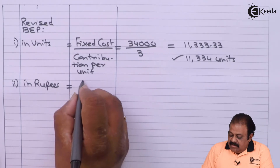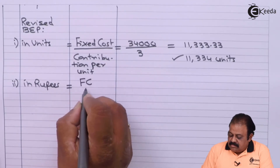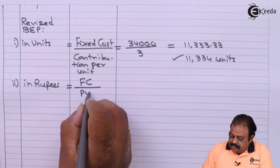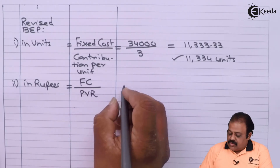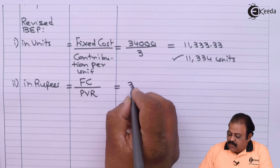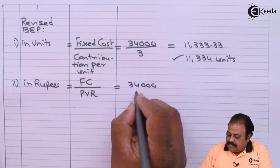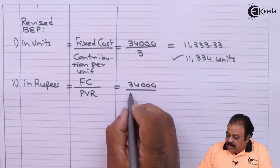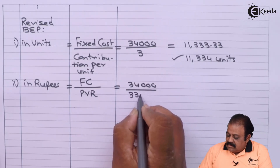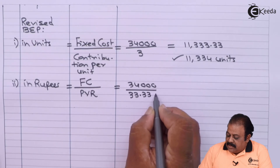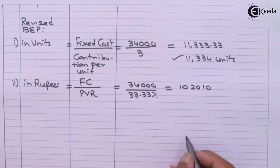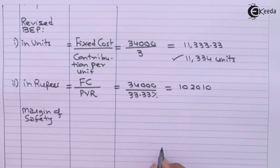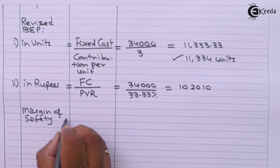For revised break-even point in rupees, the formula is fixed cost divided by PV ratio. Fixed cost is ₹34,000 divided by revised PV ratio of 33.33%, which gives us ₹1,02,010.